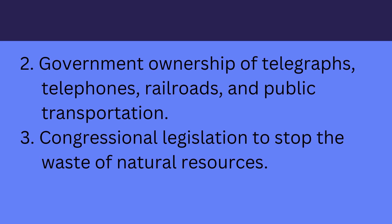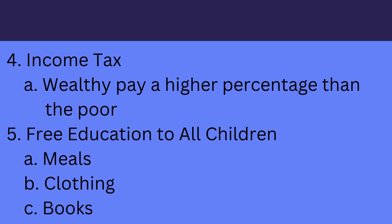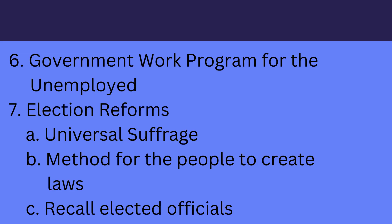Congressional legislation stopping the waste of natural resources. A sliding scale income tax where the wealthy pay a larger percentage of their earnings than the poor. Free education to all children, including assistance for meals, clothing, and books when necessary. A government work program for the unemployed. And election reforms such as universal suffrage, a method by which people can create laws, and the ability to recall elected officials.